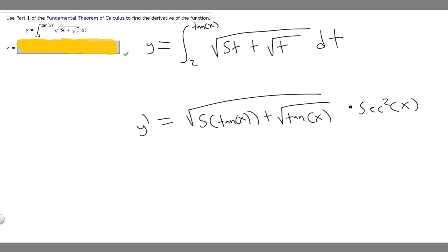That's basically how you solve it. In this problem, y prime is going to be equal to the square root of 5 times the tangent of x plus the square root of the tangent of x, all times secant squared of x.